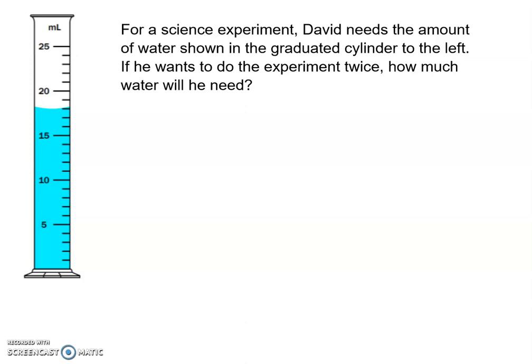So let's look at this. David needs the amount of water shown in the graduated cylinder. So here's the cylinder. So well, how much water is actually shown here? So it looks like the main hash marks here are by fives, right? It goes by fives. So five, 10, 15.